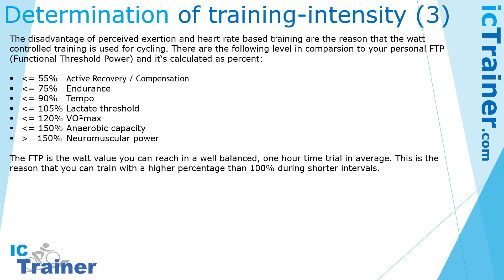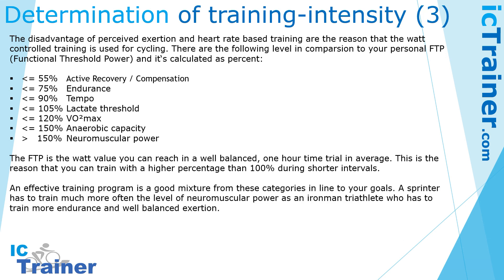Why do we have values higher than 100%? The FTP — Functional Threshold Power — is the average value you can sustain in a well-balanced one-hour time trial. For sure, the power you can ride for one hour is lower than the power you can produce in a short sprint.